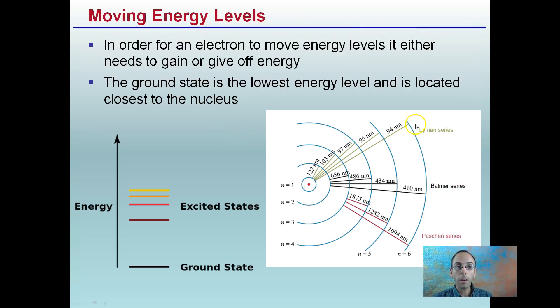So putting this into perspective, moving energy levels, we're looking at the atom again in our energy levels. In order for an electron to move the energy levels, it either needs to gain or give off energy. Remember, we can't create or destroy energy, it has to only be transferred. The ground state is the lowest energy level, and it's located closest to the nucleus. So in our example here, this would be the ground state, and these energy levels would represent different levels of excited states and increasing energy as we get further away from the nucleus.